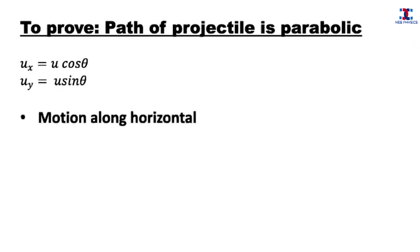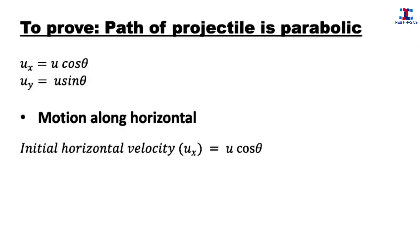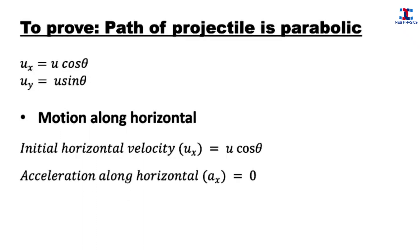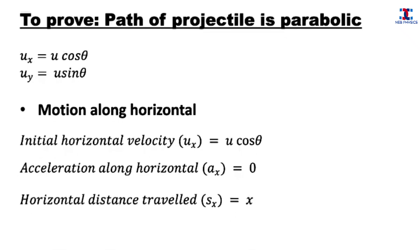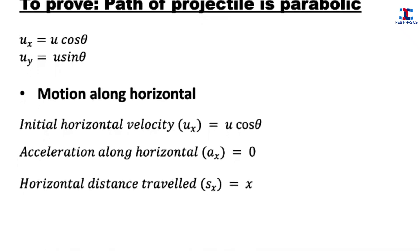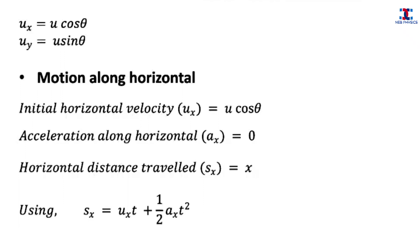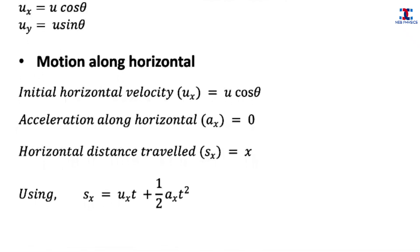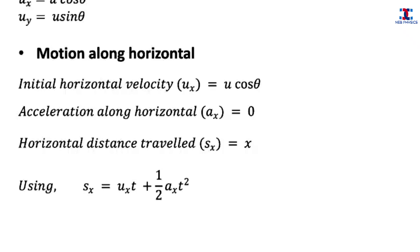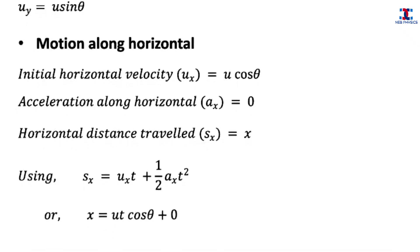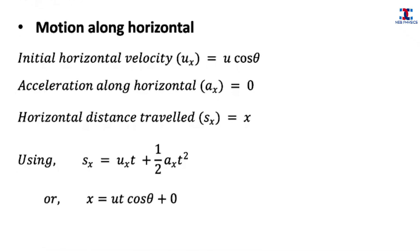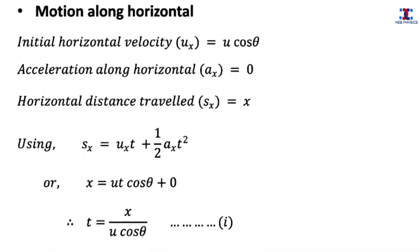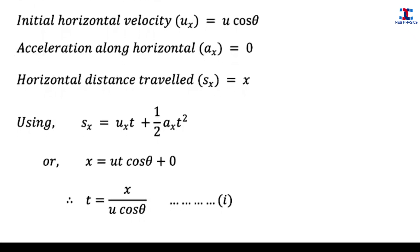Now let us analyze only the horizontal motion of the projectile. The initial horizontal velocity ux equals u cos theta, the horizontal acceleration ax equals 0, since the horizontal component of velocity is always constant, and the horizontal distance traveled sx equals x. Using the equation of motion, sx equals ux·t plus half·ax·t², and substituting the values, we get the expression for time: t equals x divided by u cos theta. Let this be equation 1.